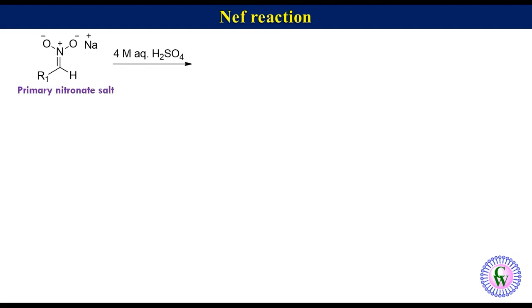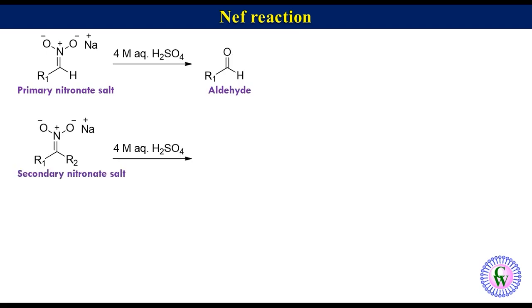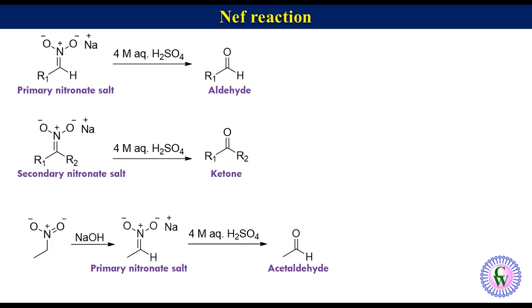NEF reaction is the acidic hydrolysis of a primary nitronate salt to produce an aldehyde, and a secondary nitronate salt to produce a ketone. The first reported example of the NEF reaction is the conversion of nitroethane to acetaldehyde.